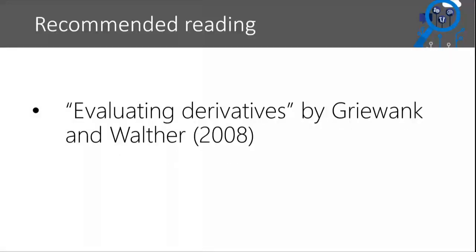The book you should all read if you're interested in automatic differentiation is called Evaluating Derivatives by Griewank and Walther. If you're interested in machine learning languages - how they work, how they're implemented, or if you want to build your own machine learning language - you should definitely read this book, mainly because even though it doesn't talk about machine learning or probabilities at all, the ideas are very relevant. You can think of AD as a blueprint for how a machine learning language would work, basically how you would transform an input specification into a numerical algorithm.